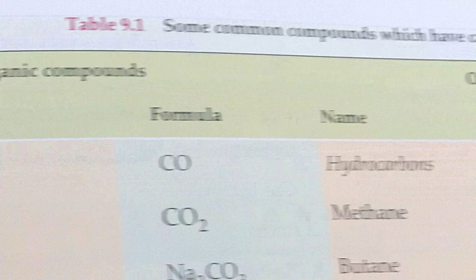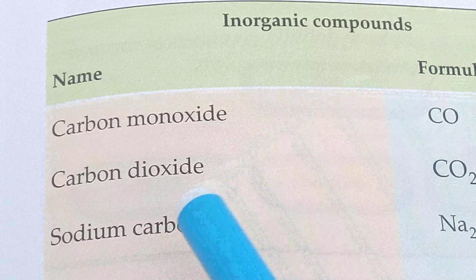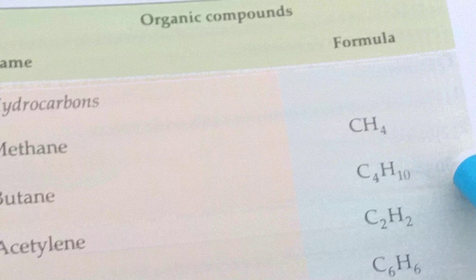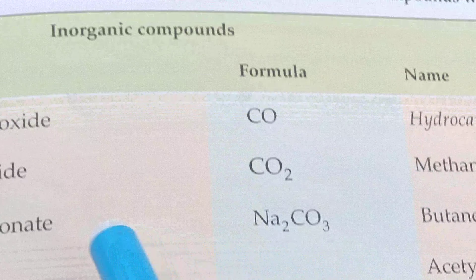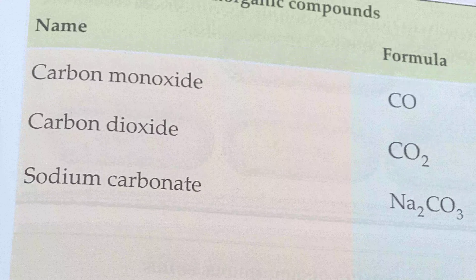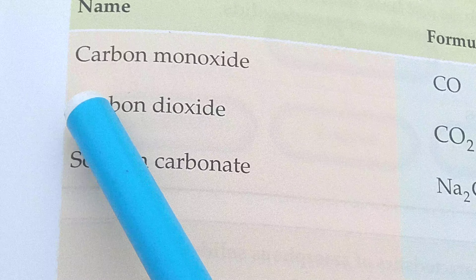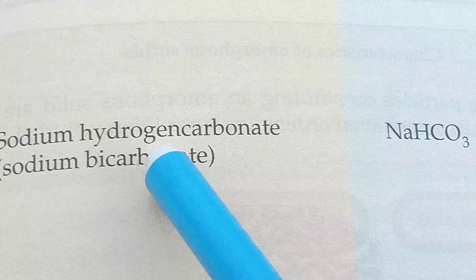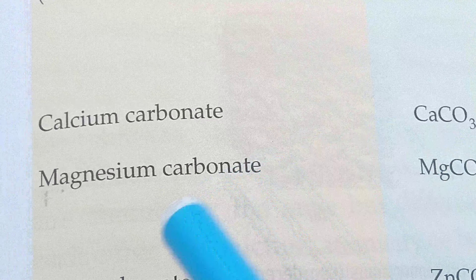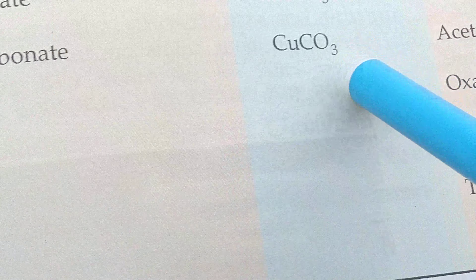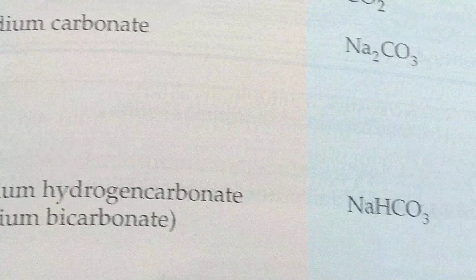Here is a chart of inorganic compounds with their names and formulas. Students, you have to learn the chemical name as well as the formula. In the combined form, inorganic carbon compounds include: carbon monoxide, carbon dioxide, sodium carbonate, sodium hydrogen carbonate (or sodium bicarbonate), calcium carbonate, magnesium carbonate, zinc carbonate, copper carbonate, etc.